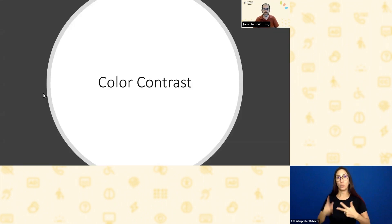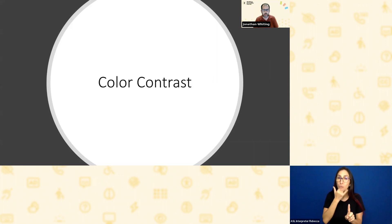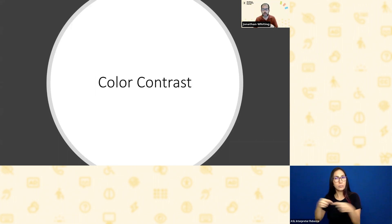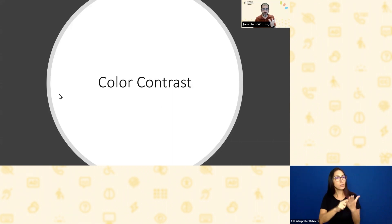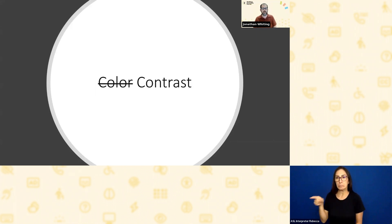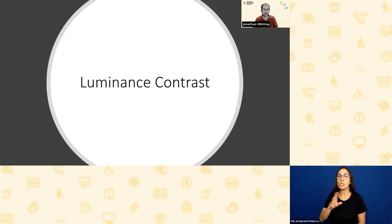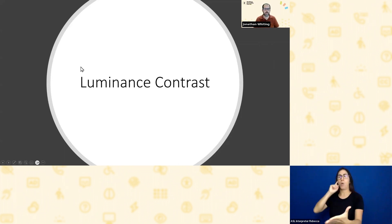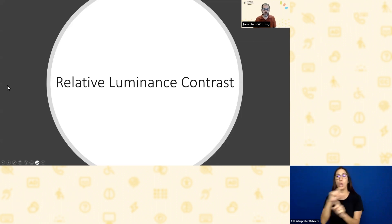A phrase that gets used a lot — and it's not even incorrect — is 'color contrast.' Color is an aspect of contrast as we perceive it. Different color combinations can impact perceived contrast. But in the Web Content Accessibility Guidelines — WCAG — they actually don't talk about color contrast. What they talk about is luminance contrast. It's not about the colors you choose; it's about the brightness difference between colors. The full term used is relative luminance contrast.